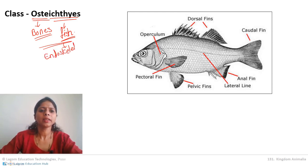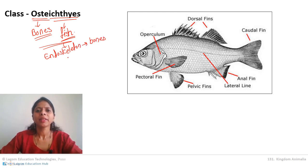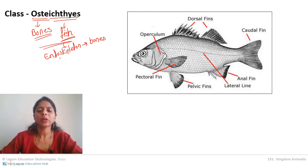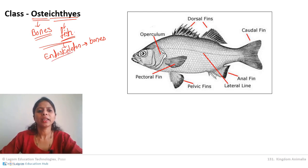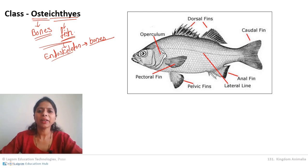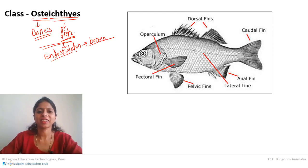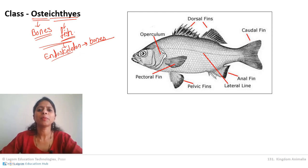The first characteristic of Osteichthyes is that the endoskeleton is made up of bones. This is why they are called bony fish — the endoskeleton is specifically composed of bones.